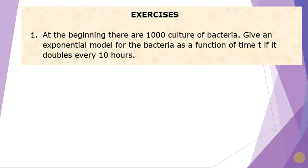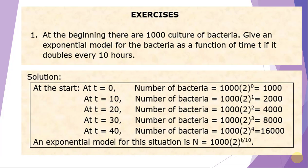Problem number one: At the beginning there are 1,000 cultures of bacteria. Give an exponential model for the bacteria as a function of time t if it doubles every 10 hours. Solution: At the start, t equals zero, the number of bacteria equals 1,000 times 2 raised to zero, because t is zero.